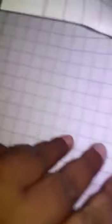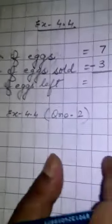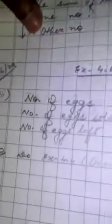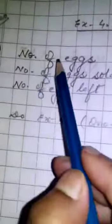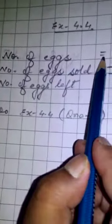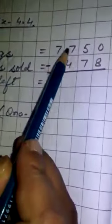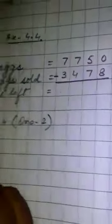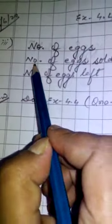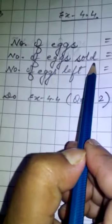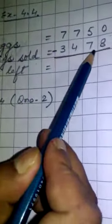So what you will do here, how you will write? Now you see the classwork. See what I have done. Number of eggs means kitna, number of eggs kitna 7750. Now second line, number of eggs sold kitna bika 3478, and then last you write it down, first you have to subtract.